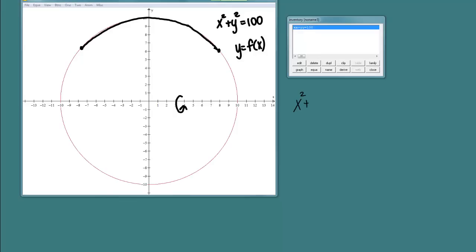So if I do that, I have Y squared equals 100 minus X squared, and then Y equals plus or minus the square root of 100 minus X squared. But I need to know which one of those to choose, the plus or the minus.